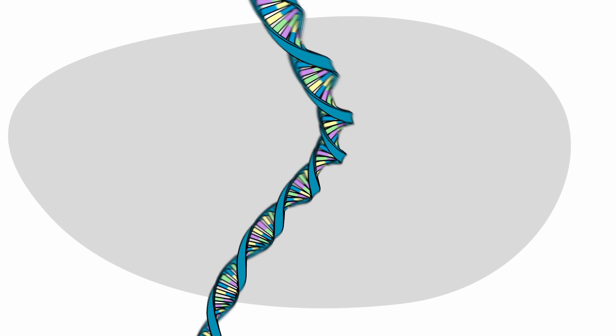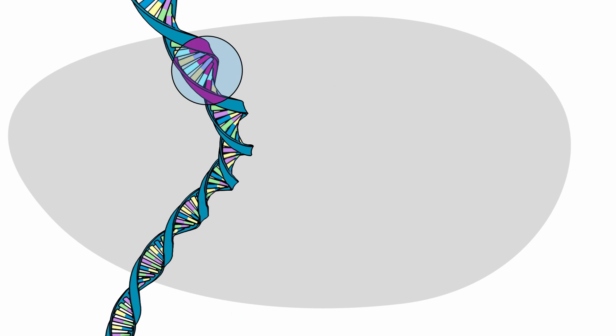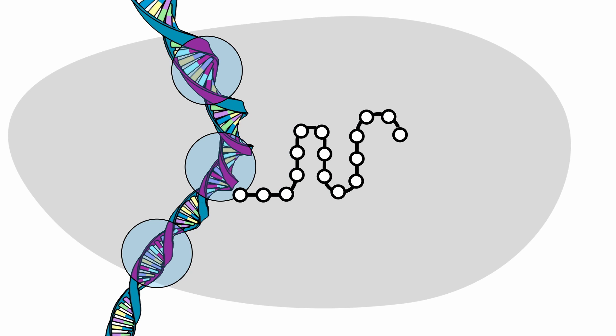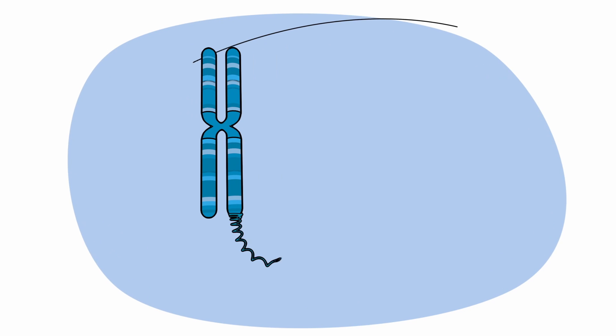Each piece of information is carried on a different section of the DNA, and these sections are called genes. Genes tell a cell how to make a specific protein, which is used by the cell to grow and survive.